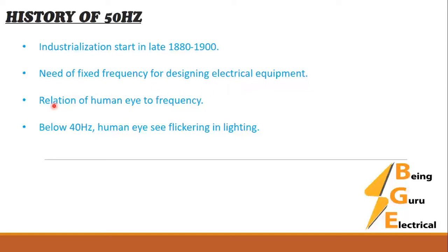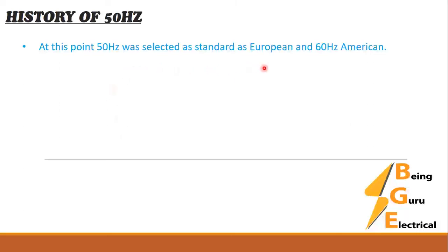They started checking frequencies like 25 Hertz, 30 Hertz, and 40 Hertz. Then they observed the relation with the human eye — the human eye can detect flickering at 40 Hertz and below. On this basis, they selected 50 Hertz for the European standard and 60 Hertz for the American standard. At 50 and 60 Hertz, flickering vanishes. Also, if you increase the frequency the cost of equipment increases — equipment designed for 60 Hertz is more expensive than 50 Hertz.